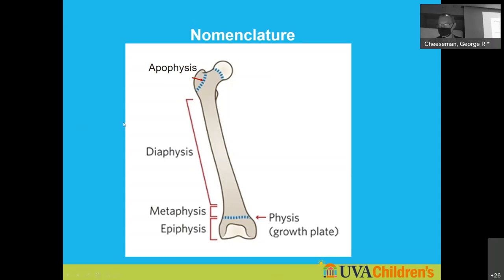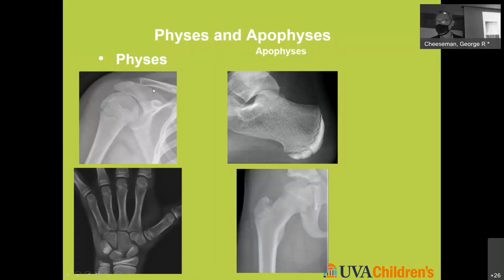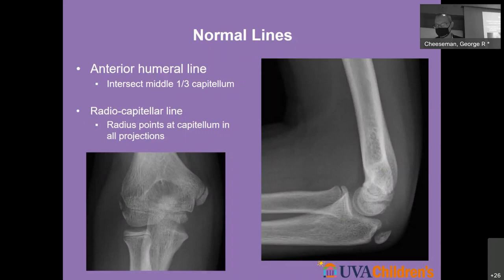Here's a physis at the proximal humerus — here's our epiphysis, our physis, which contributes to longitudinal growth of the bone. Here's our calcaneal apophysis, which does not contribute to longitudinal growth and is the insertion site for the Achilles tendon. The epiphyses and physes through the digits contribute to longitudinal growth. The greater and lesser trochanters are apophyses. This helps with reporting and nomenclature.